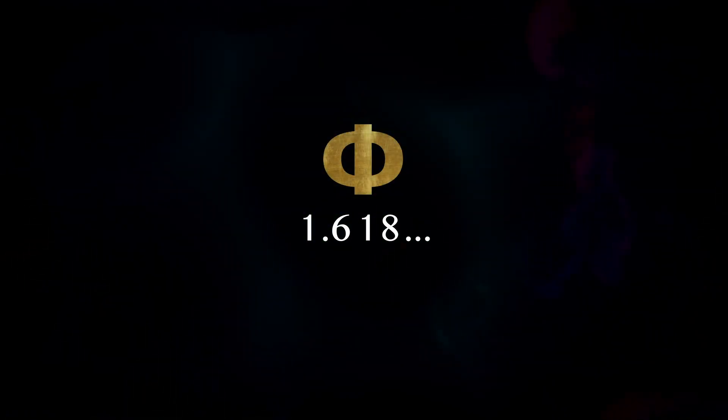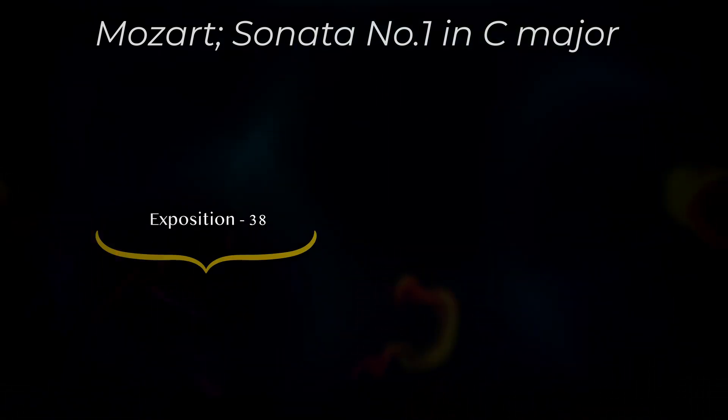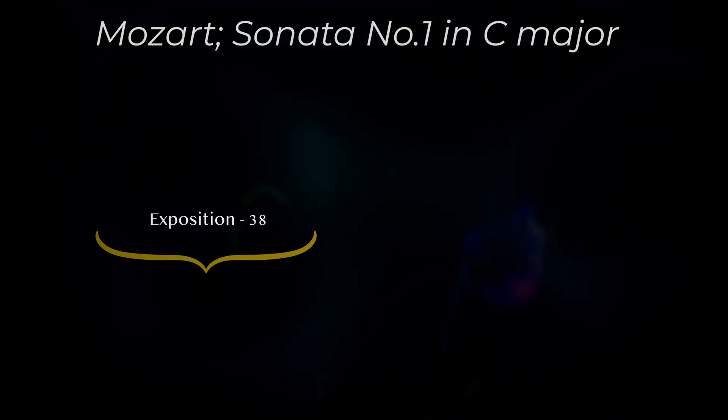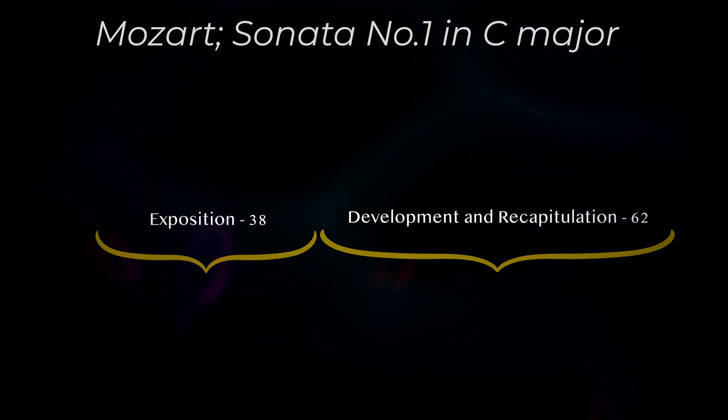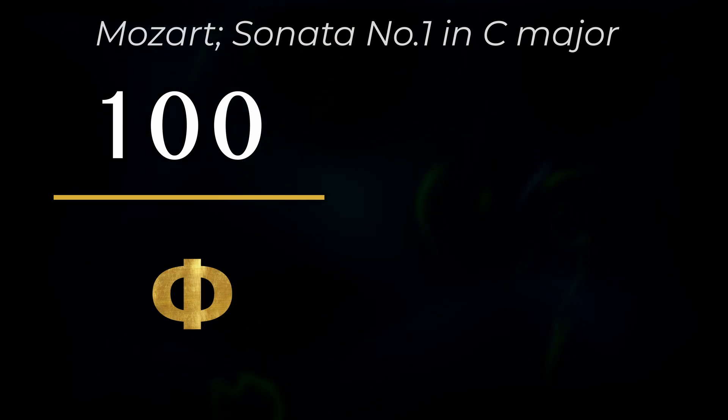Take, for example, the first movement of Mozart's Piano Sonata No. 1 in C major. The exposition is 38 bars long, while the development and recapitulation combined are 62 bars, giving us 100 bars in total. Dividing the total number of bars by the golden ratio phi gives us the exact proportions Mozart used. The same proportions can be seen in Beethoven's Fifth Symphony, in Debussy's Reflets dans l'eau, and a fantastic example of the Fibonacci number sequence in the opening xylophone solo in the third movement of Bartók's Music for Strings, Percussion and Celeste, in which it goes up and down the beginning of the sequence.